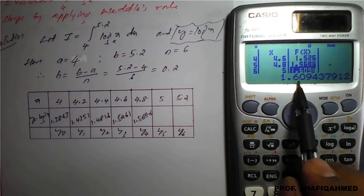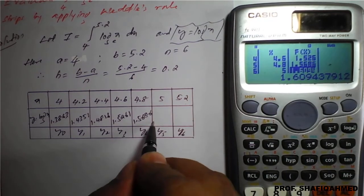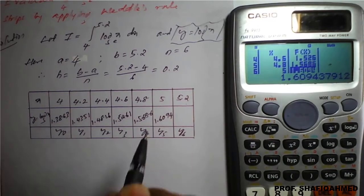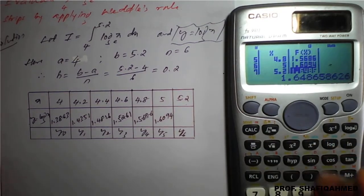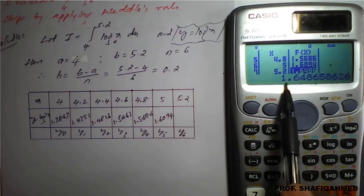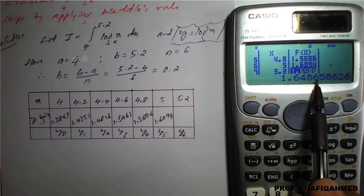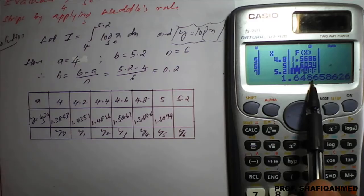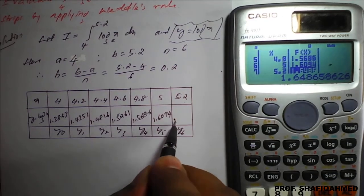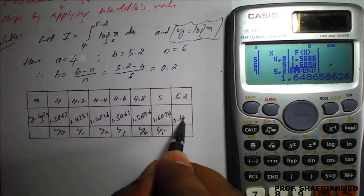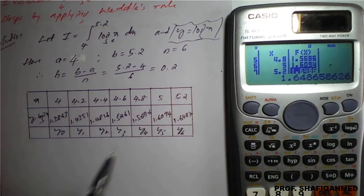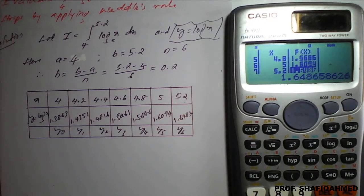Next value for 5 is 1.6094. The last one, for 5.2, is 1.6487. These are the table values now.